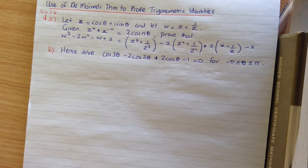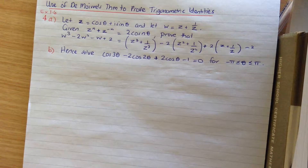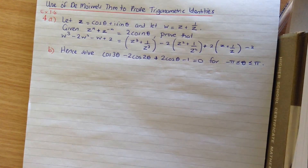Question 4, exercise 1.6. This is where we're using de Moivre's theorem to prove trig identities.